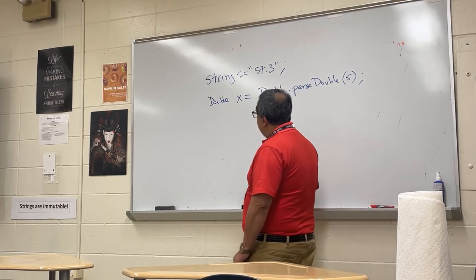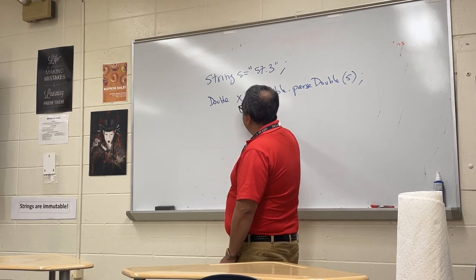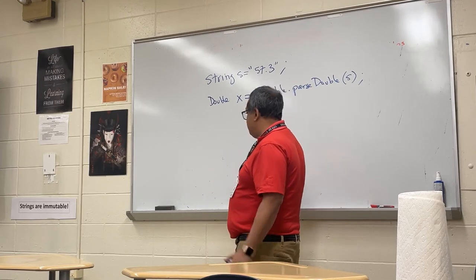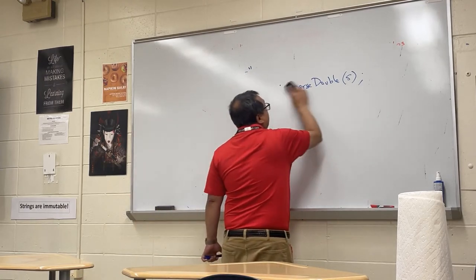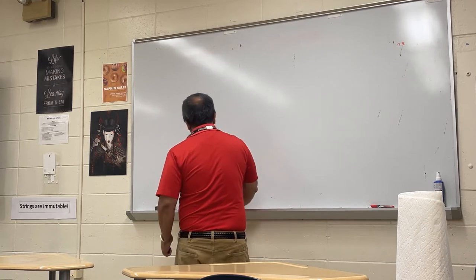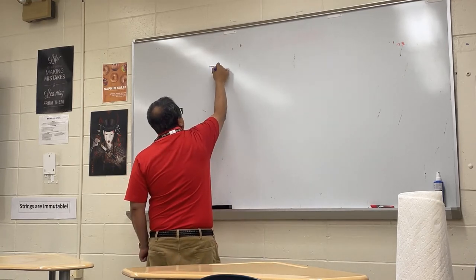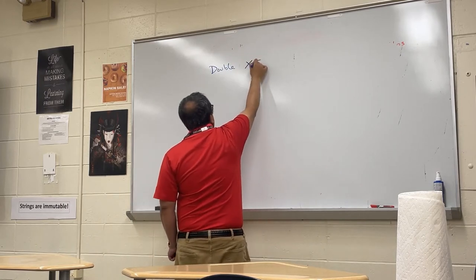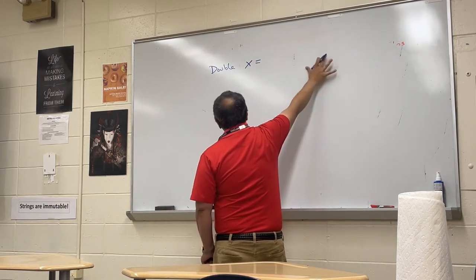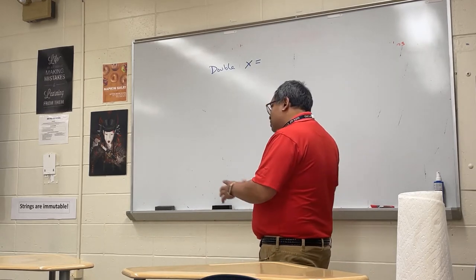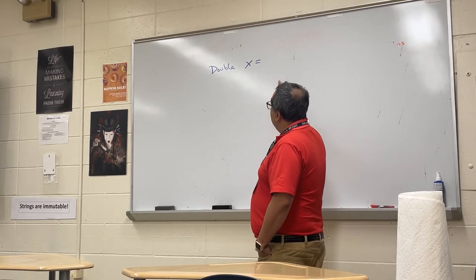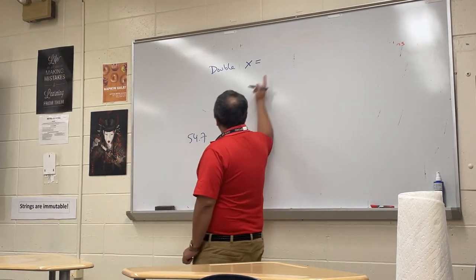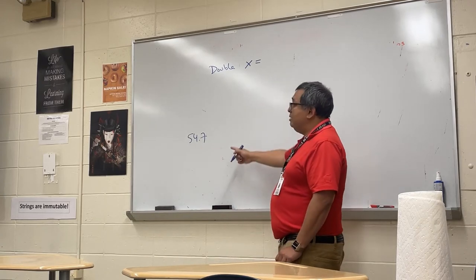Now I want to show you how to create wrapper objects and how to convert between wrapper objects and primitives. So let's say we wanted to create a Double object — we'll call it x. Based on what you know about how you create objects in Java, and we want to create the number 54.7, what would I need to put here to make that happen? Remember, this is a class now, like Dog or House.